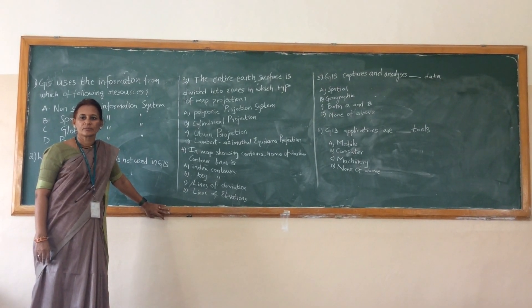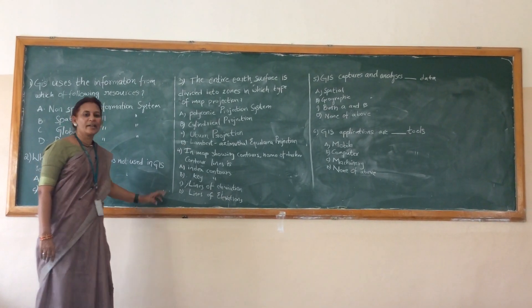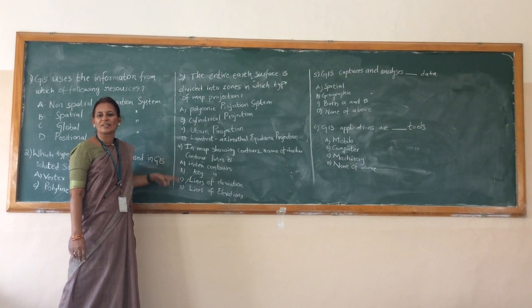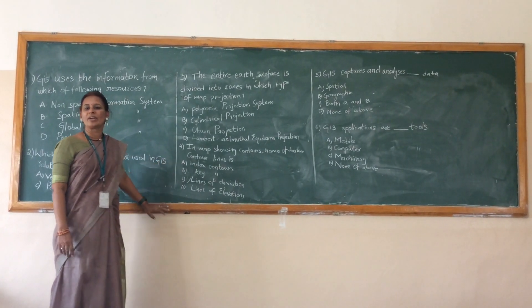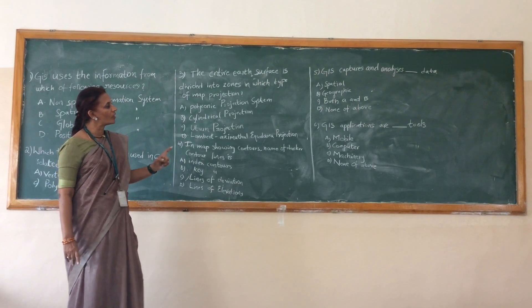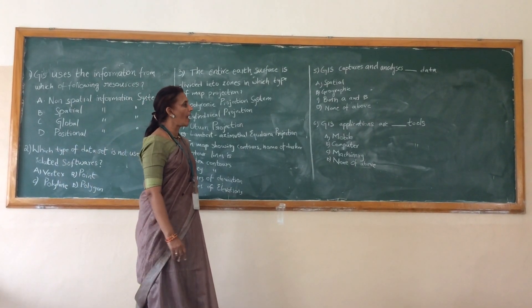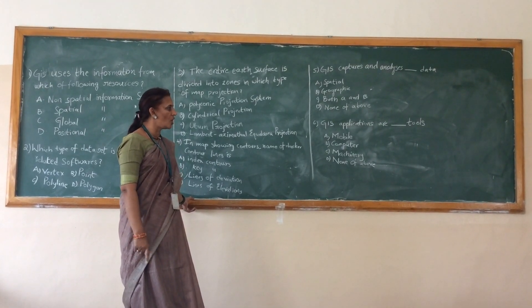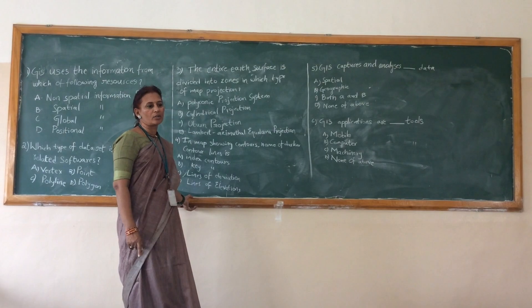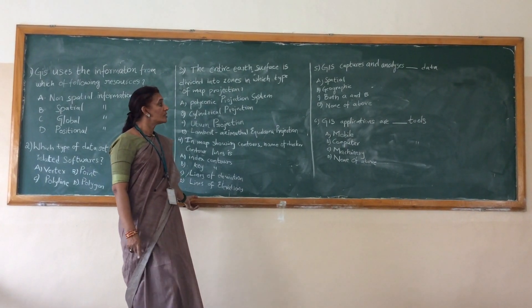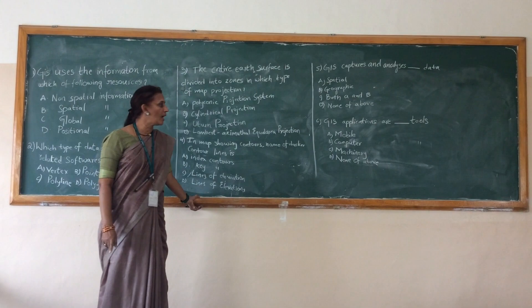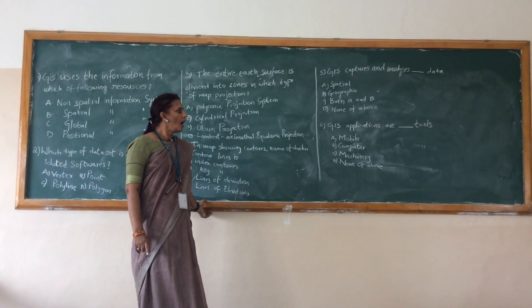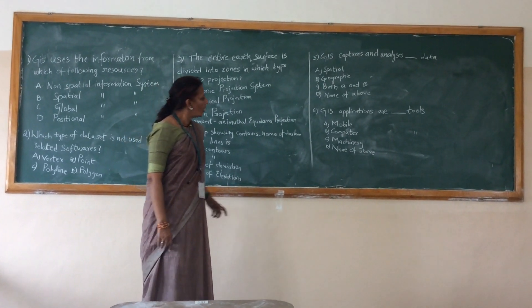Index counters are this one. Index counters are this one. Because for the key also you should give an index. For lines also you should give an index. For lines of elevation also you have to give an index. We will go for the fifth question. GIS captures and analyzes dash data. You have the spatial data, geographical data, both A and B or not at all. It is very simple you see. This captures both the A and B. That means it will take care of the spatial as well as it will take care of the geographical data.